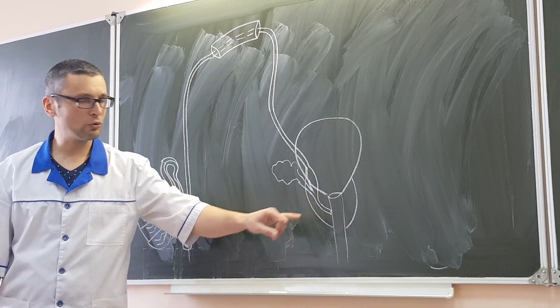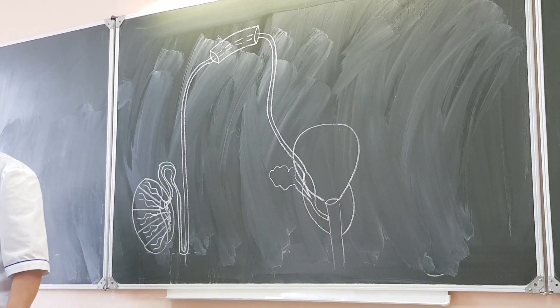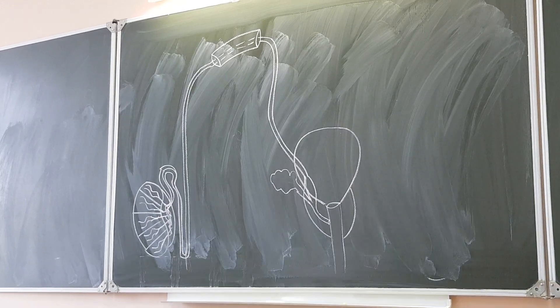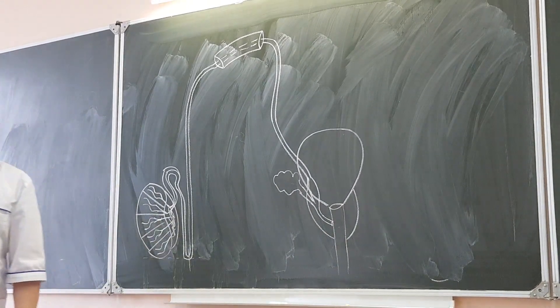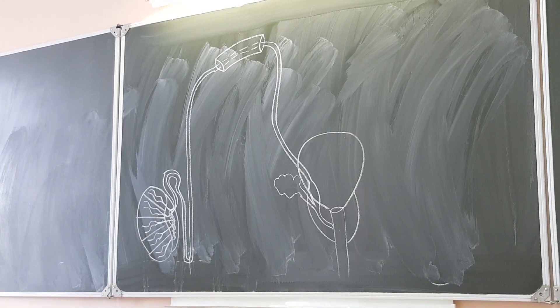And this short duct is called ductus ejaculatorius, for ejaculation of sperm. And ductus ejaculatorius opens into urethra, prostatic part of urethra, on both sides.